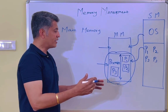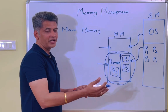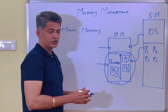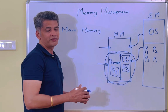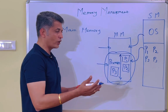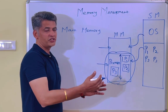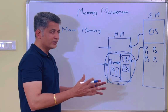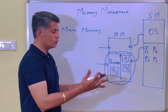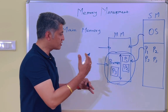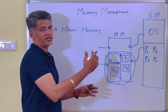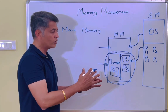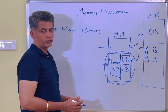If you are doing contiguous memory allocation, then what type of difficulties will come? There are two different types of difficulties: one is internal fragmentation and the second one is external fragmentation. We will discuss contiguous allocation, non-contiguous allocation, and these two difficulties in the coming video.